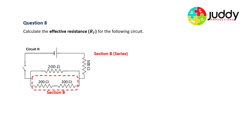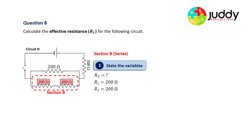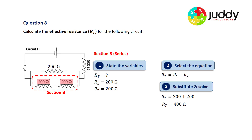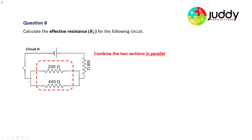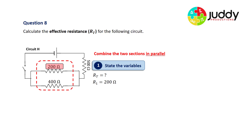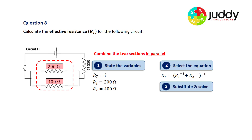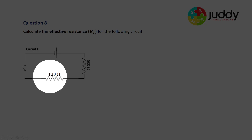Section B is in series: R1 is 200 and R2 is 200. Adding them together, 200 plus 200 gives a total resistance of 400 ohms for section B. The two resistors are replaced by a single 400 ohm resistor. Now combining these two sections in parallel: R1 is 200 ohms and R2 is 400 ohms. Using the parallel equation and substituting our values, that parallel branch has a total resistance of 133 ohms. The two parallel branches are replaced by a single 133 ohm resistor.